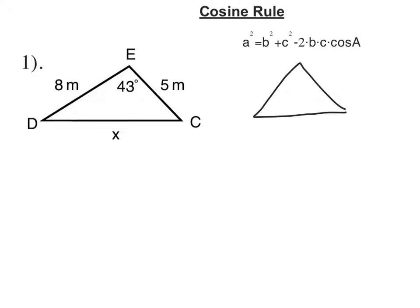This video is about working out a side length using the cosine rule. The cosine rule is this here. a squared equals b squared plus c squared minus 2bc cos A. And it's given in your formula booklet.